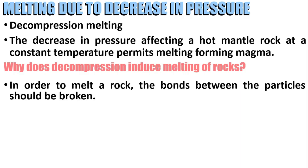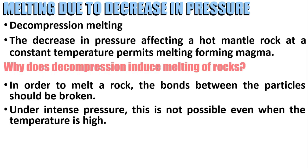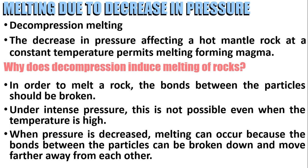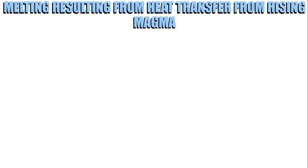In order to melt a rock, the bonds between the particles must be broken. Under intense pressure, this is still not possible even when the temperature is high. When pressure is decreased, the bonds between the particles can be broken down, and because of this, the particles move farther away from each other.